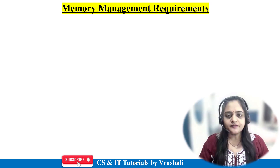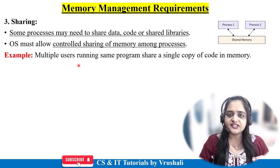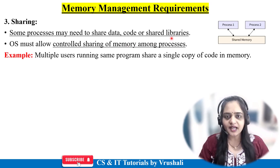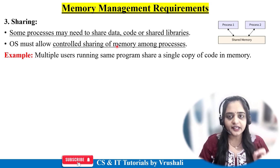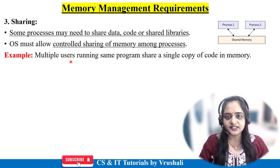The third memory management requirement is sharing. Multiple processes can share the same code, programming files, or libraries. The operating system allows and controls access to all shared resources, ensuring no conflicts occur. That's why the OS provides a common shared space between processes.